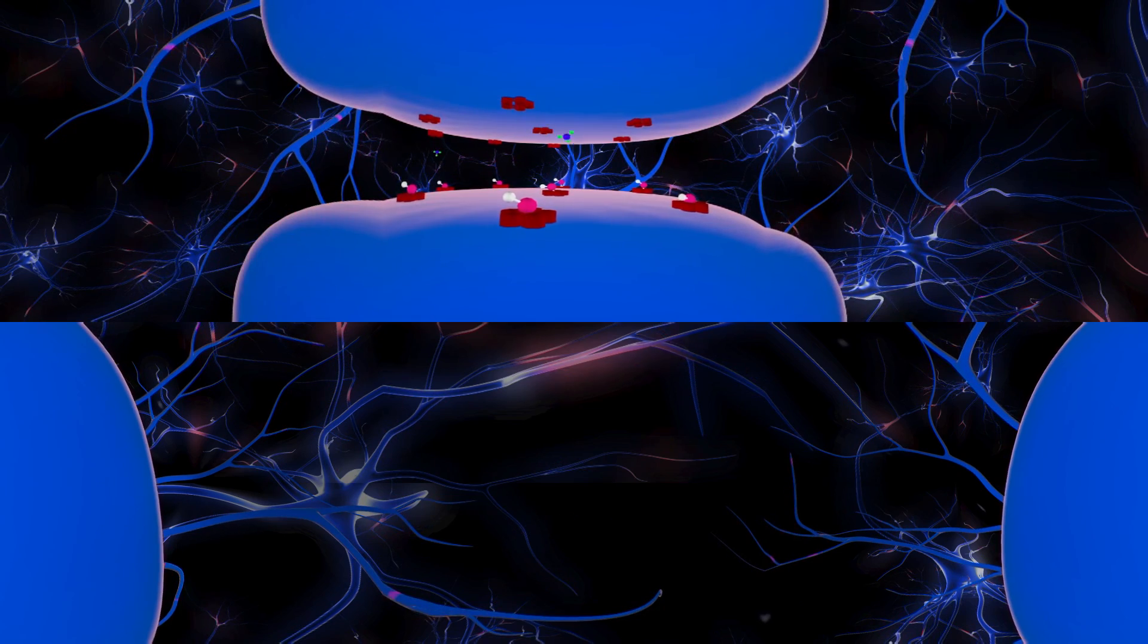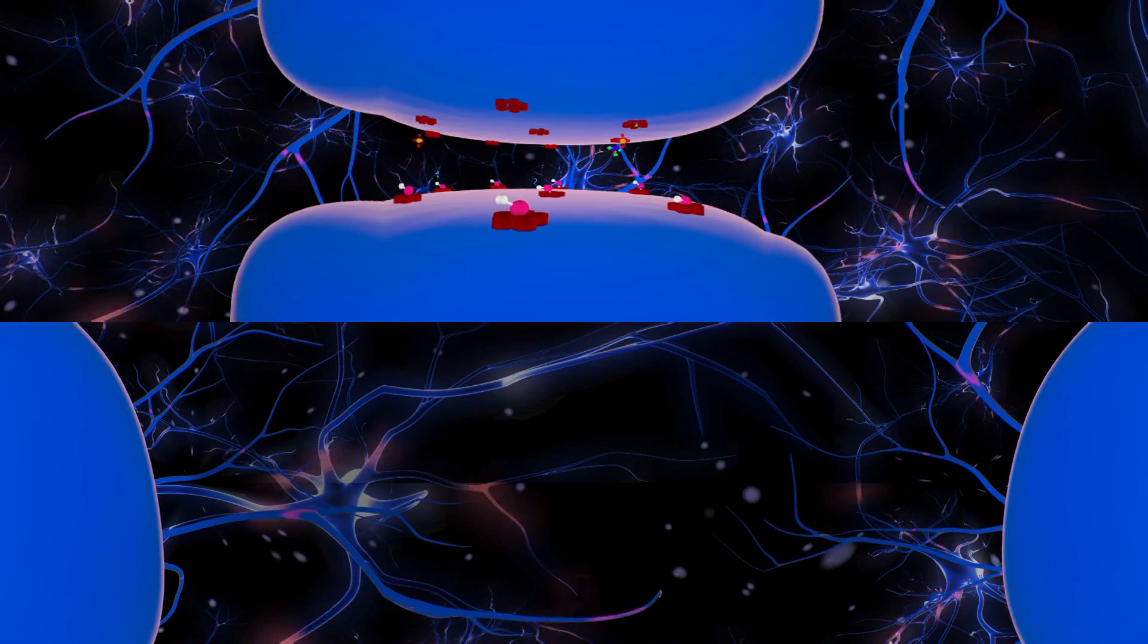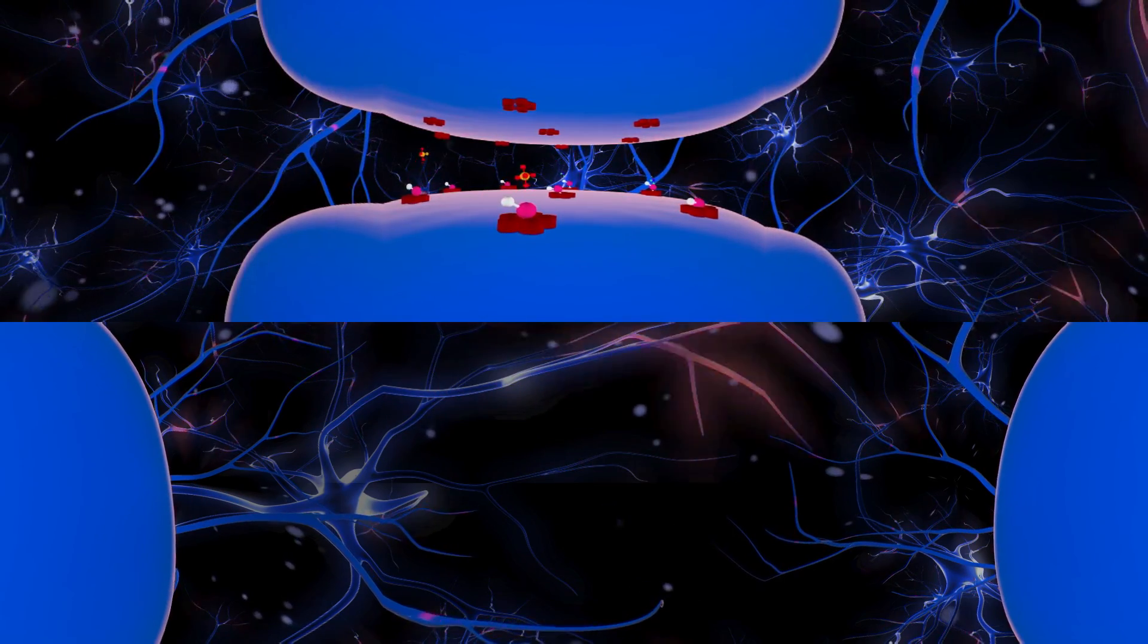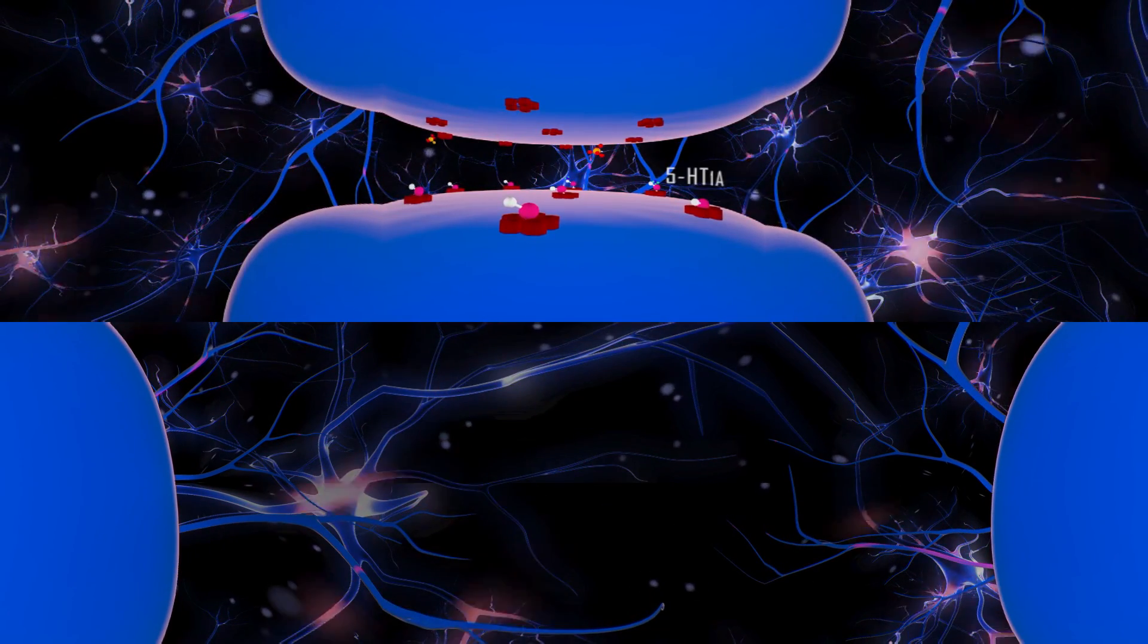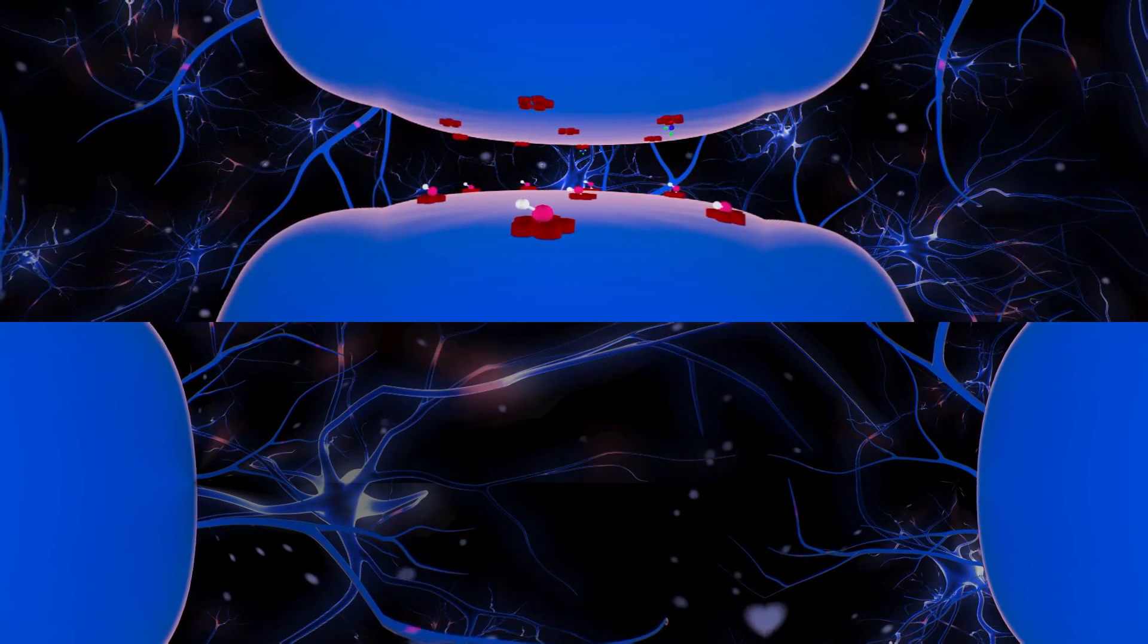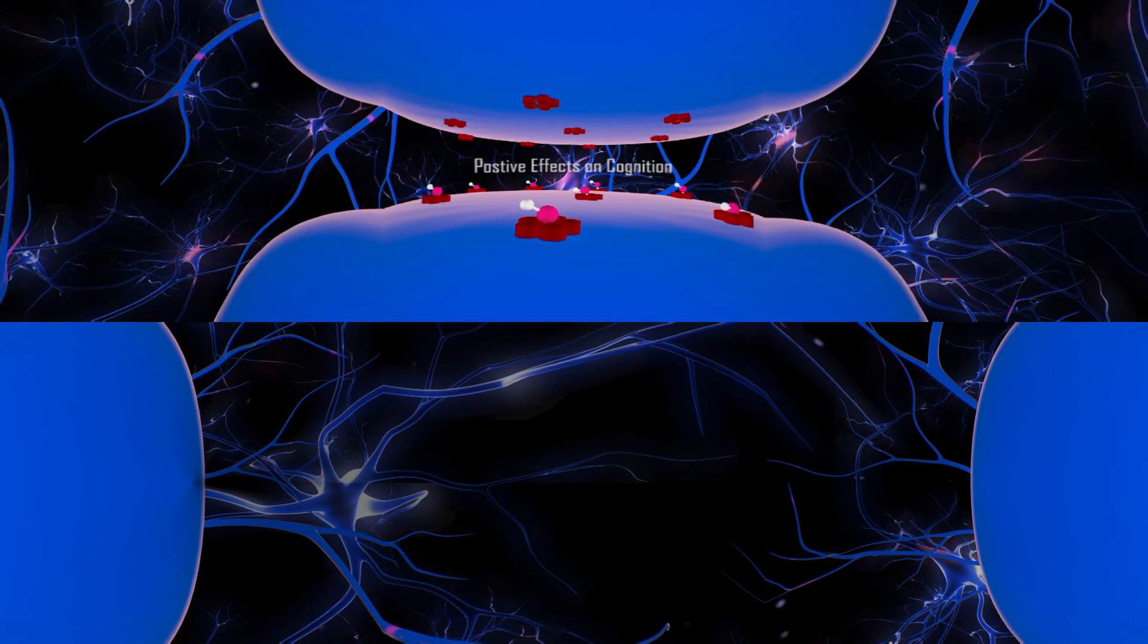Blockade of 5-HT7 receptors coupled with affinity for alpha-2C adrenergic receptors and partial agonism add 5-HT1A receptors results in positive effect on cognition and mood.